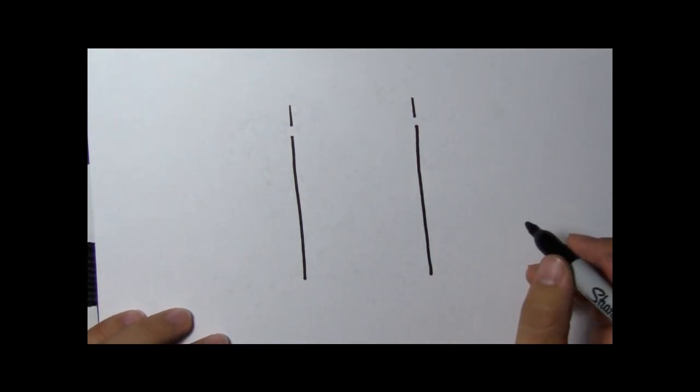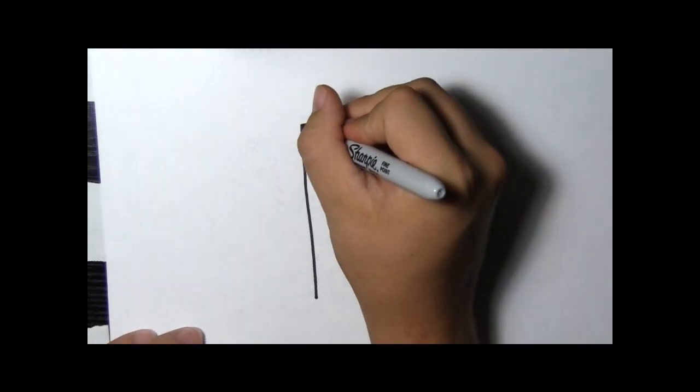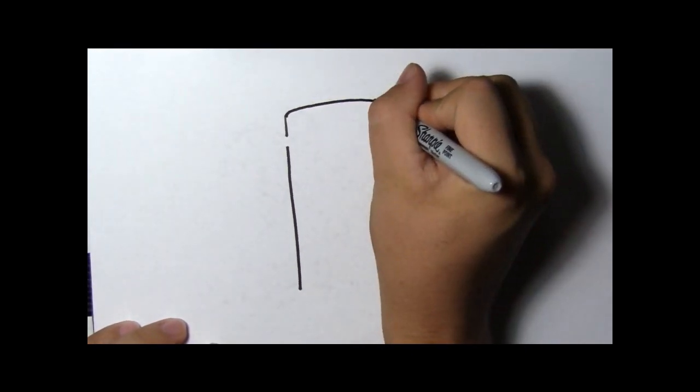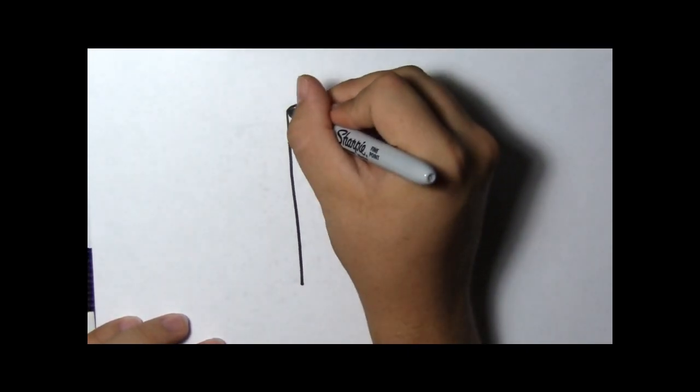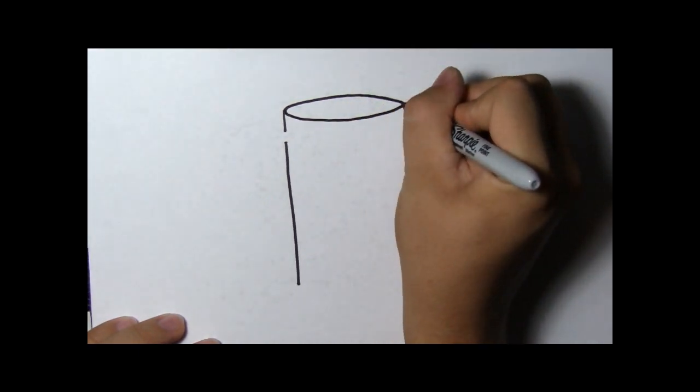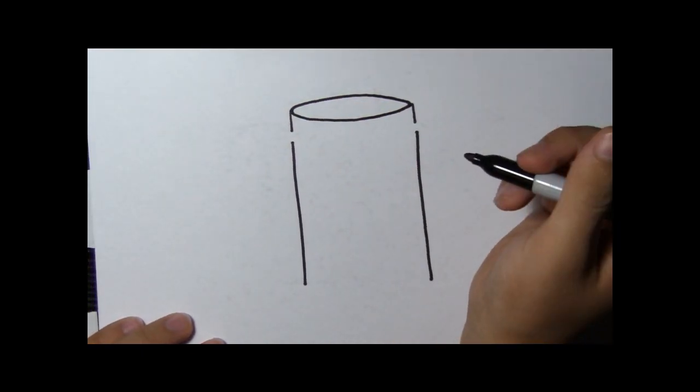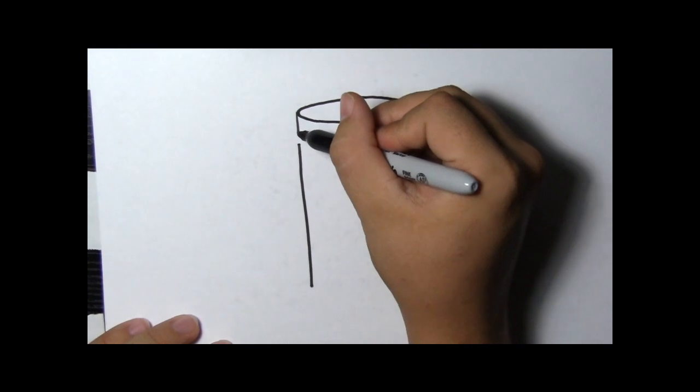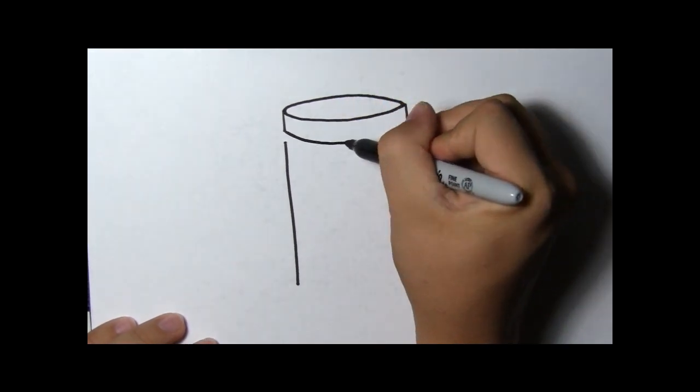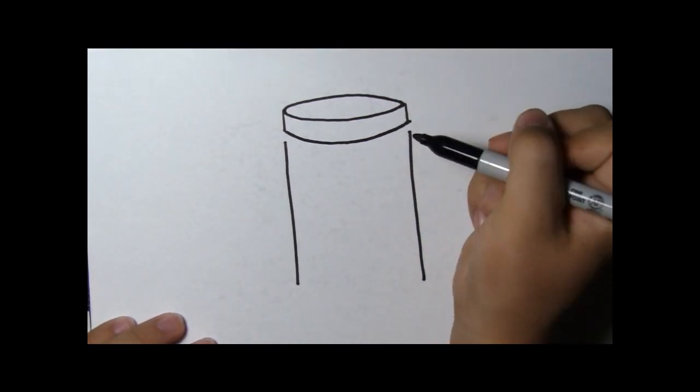Now we're going to draw ovals. Let's start with our top oval. It will connect the top two lines. Now we're going to do the same thing below it but only draw half of the oval.